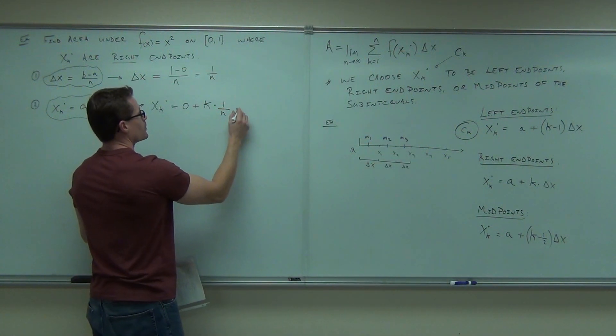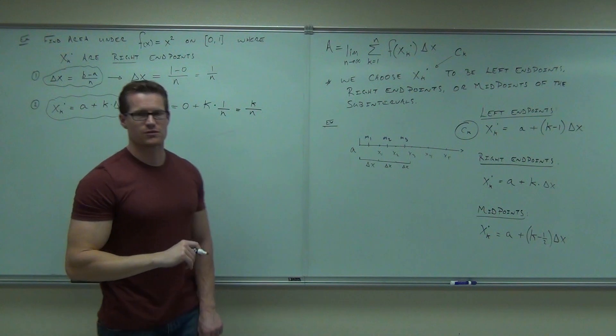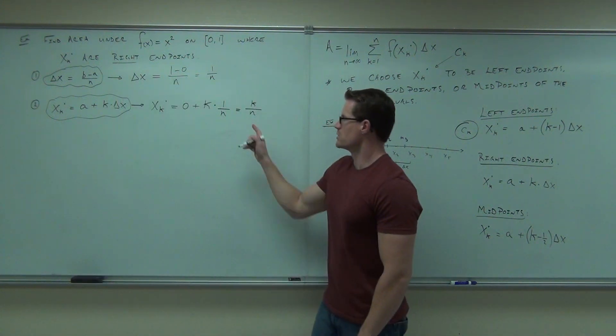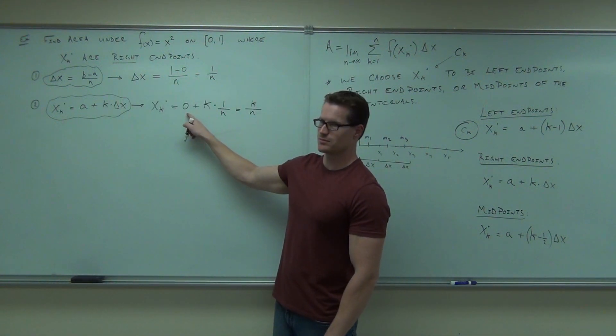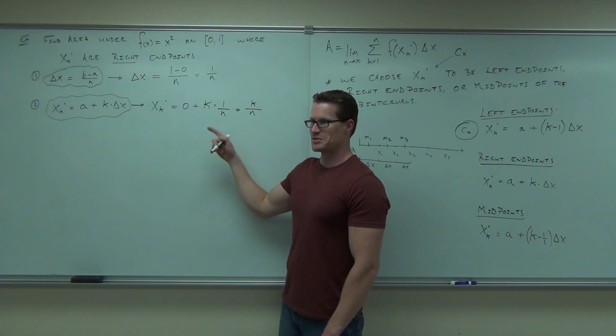It was 1 over n, which means for us that we're going to get k over n. By the way, this becomes fairly harder when you don't have a zero. If you have a zero, it's kind of nice. Why? Well, when you add zero to anything, it gives you anything.